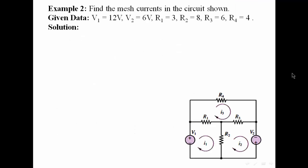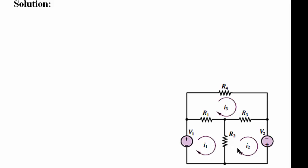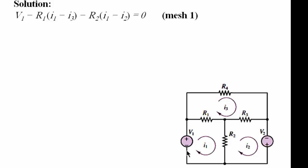Example two: find the mesh currents in the circuit shown. First, we define mesh currents I1, I2, and I3. Now we apply KVL in each loop. Starting from this point for mesh one: V1, minus R1 multiplied by (I1 minus I3), minus R2 multiplied by (I1 minus I2), equals zero.